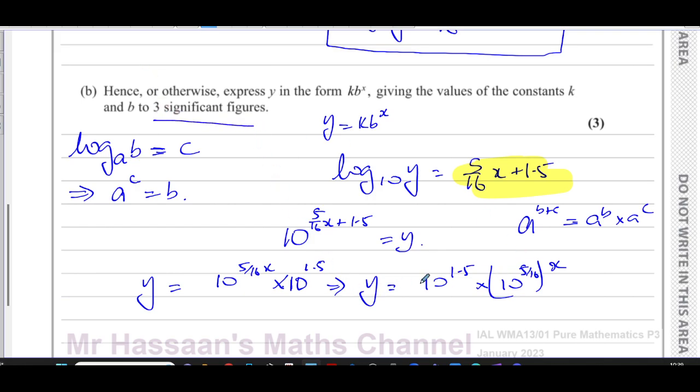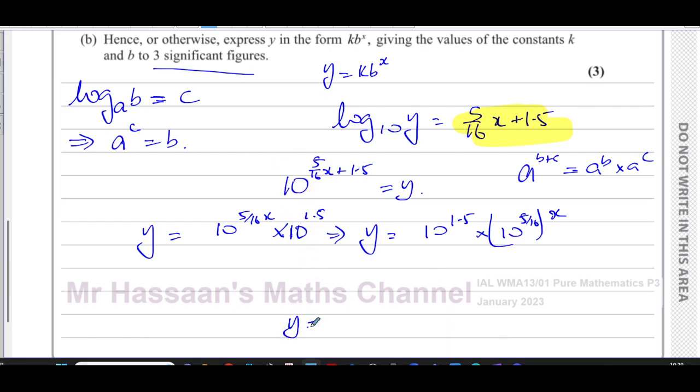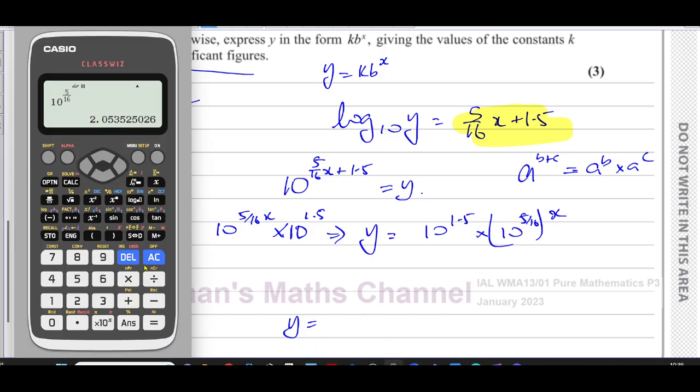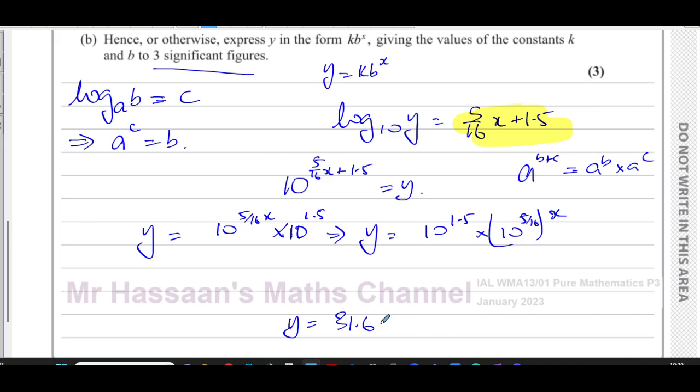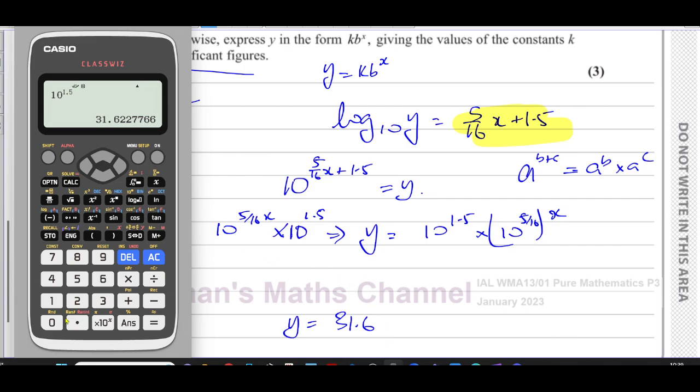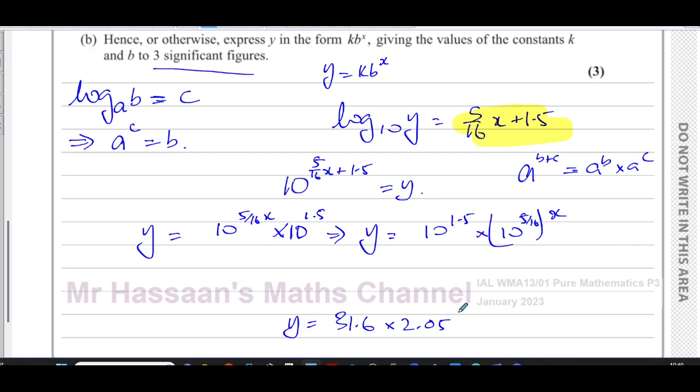So we have 10 to the power of 1.5, which gives us 31.6 to 3 significant figures. That's 31.6 times 10 to the power of 5 over 16. Let's see what that gives us. That gives us 2.05 to 3 significant figures. So that's going to be times 2.05, and that's to the power of x. So this is your k, and this is your b. So there we have the answer to that question, question number three part b, from this paper.